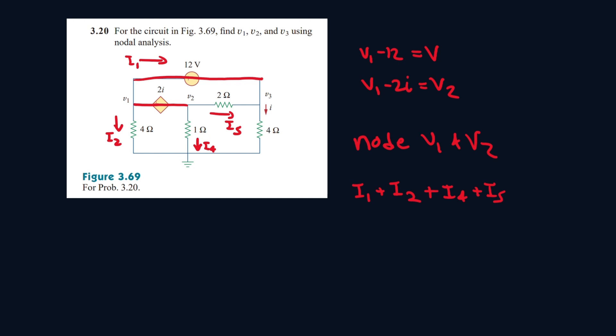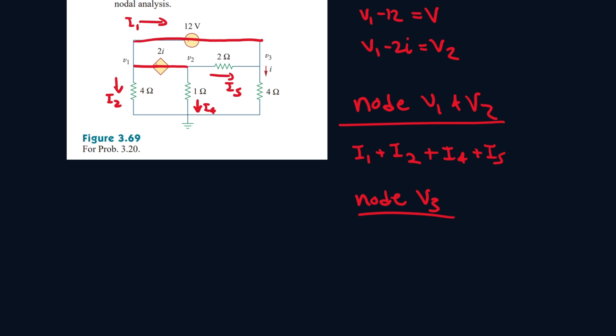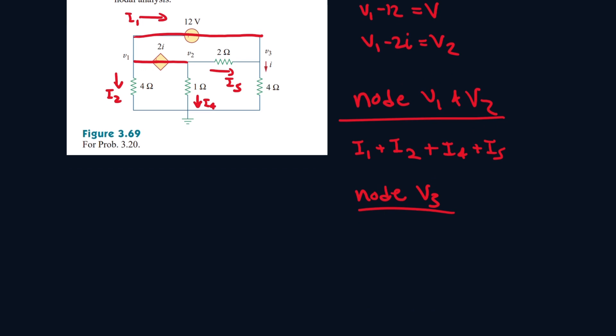Now let's work on the second equation. So node v3, it's i1 that's entering it, and this will be equal to i5 that's also entering it. Sorry, plus i5 that's entering it, so i1 plus i5, and this is equal to i.